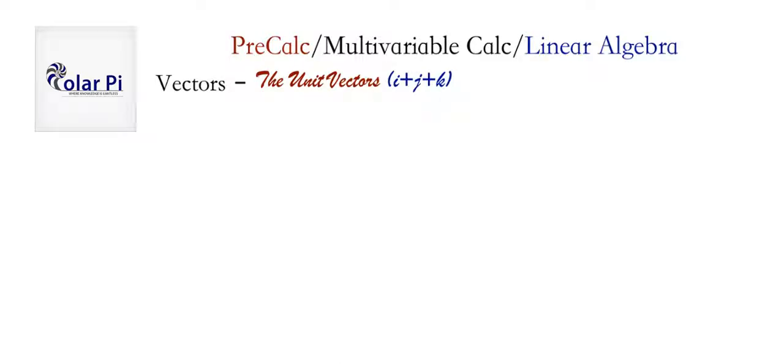Hey guys, welcome. So just like how special numbers have special names like pi and e, three special vectors have special names, and they are i, j, and k.